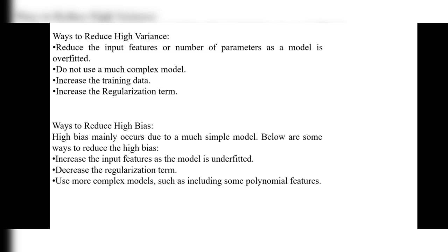See the difference: high variance occurs because of a large number of input features, but high bias occurs due to a simple model. Ways to reduce high bias: first, increase the input features — the opposite of high variance where you reduce them. In high bias, you should increase the input features, as the model is underfitted. Next, decrease the regularization term. Also, use more complex models such as including polynomial features.